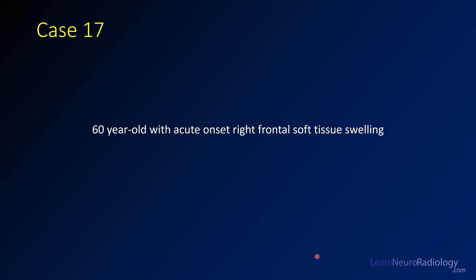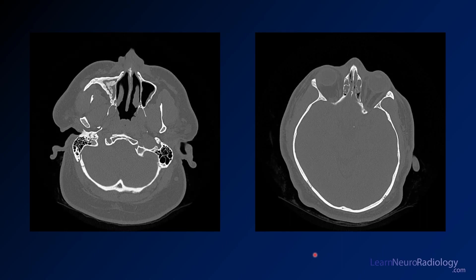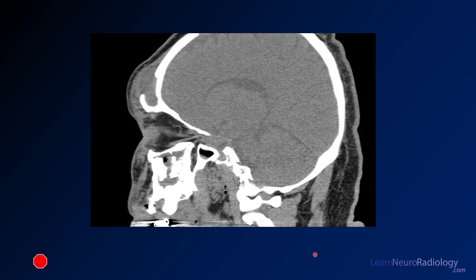Case 17 is a 60-year-old with acute onset right frontal soft tissue swelling. Here you see some CT images through the level of the frontal sinuses, some additional images, bone window images from a little bit lower, and a sagittal image through the region of the abnormality.